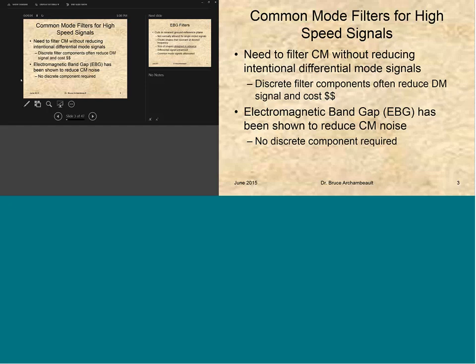The amount of loss in the printed circuit boards, in the connectors, in the cables, or whatever might be there, means that oftentimes we're barely able to make the differential eye opening that we need. So whatever filter we come up with, we need to have something that won't hurt the differential signal. And basically, just as I mentioned earlier, discrete filter components usually will reduce the differential mode signal and cost a lot of money. And even with that, they're limited in frequency.